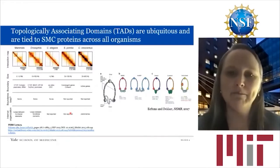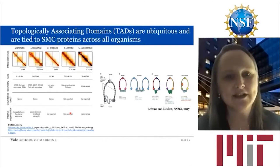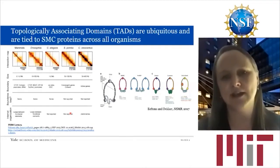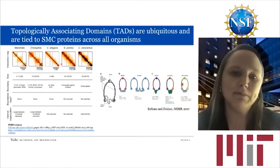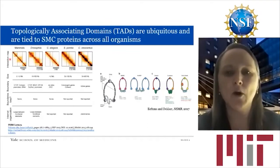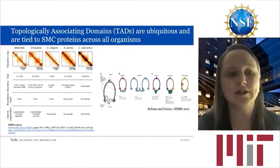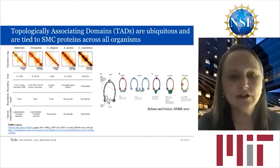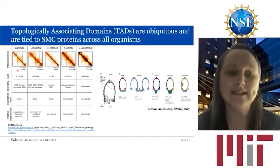I want to start by introducing the concept of TADs, or topologically associating domains. Over the past 10 years, TADs have become really foundational in our understanding of the mesoscale of chromatin organization. TADs are seen across all organisms, and they have been revealed by techniques like Hi-C. Looking at contact probability maps from Hi-C data, you can see regions of relatively high contact probability as you look down the chromosome, and then boundaries that segregate these regions from upstream or downstream TADs.